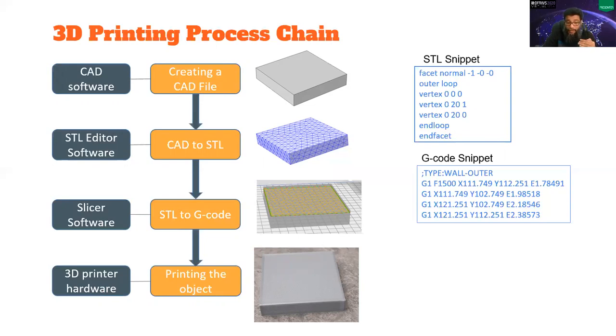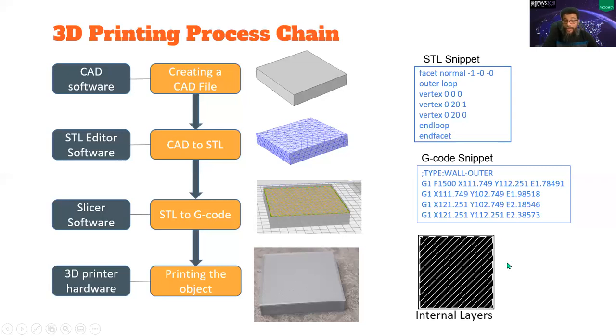As we know, this is a layer by layer printing. There is a unique phenomena in additive manufacturing that was not present in the previous subtractive manufacturing, where we would have a block and we cut it from all sides and come up with the final object. But here we are printing layer by layer. So we have the leverage to decide how the internal layers would look like. And this structure is called infill patterns.